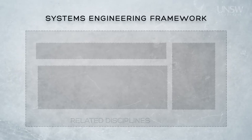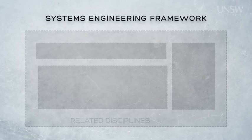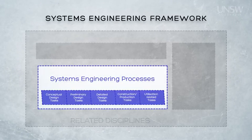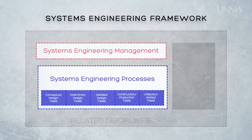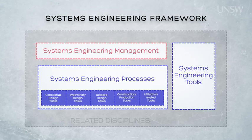For the remainder of this course, we use a simple framework which shows three main elements of systems engineering: processes — that is the doing element; management — the controlling element; and tools, which support both management and processes. These elements are placed within the context of a fourth element called related disciplines.